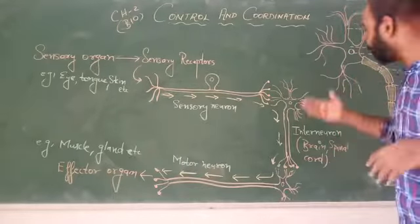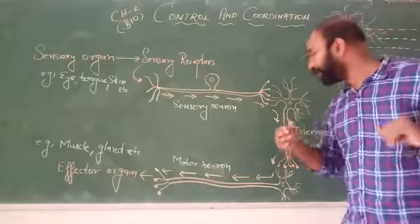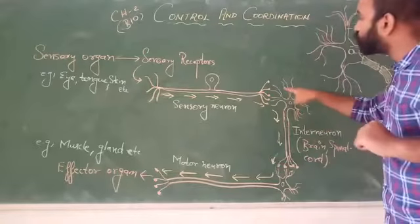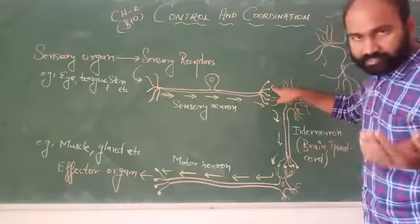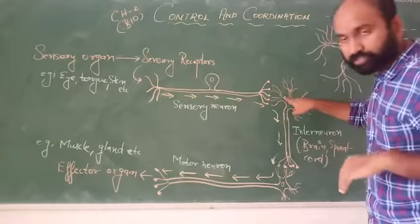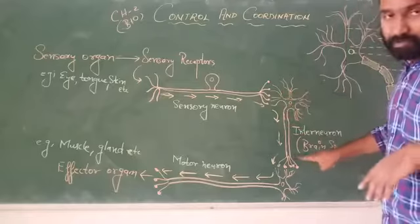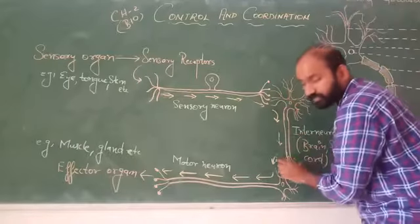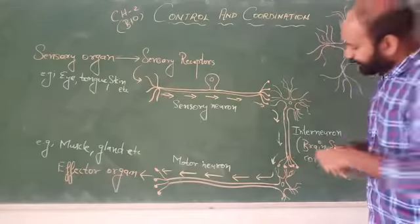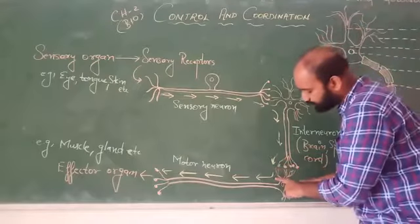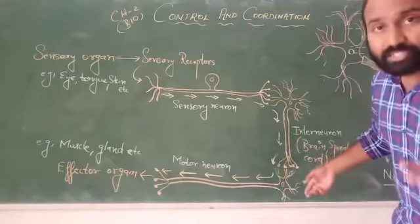The interneuron receives the signal and carries it to dendrons, then the cytoplasm of the axon through the plasma membrane, and it releases at the nerve end. At the nerve end again a signal is given to the next neuron.